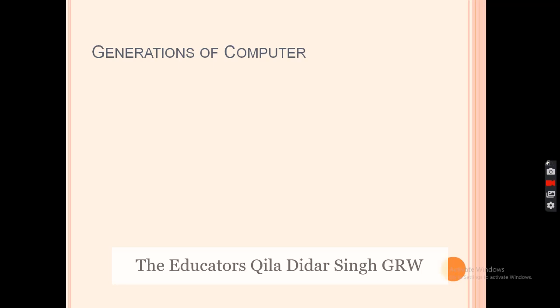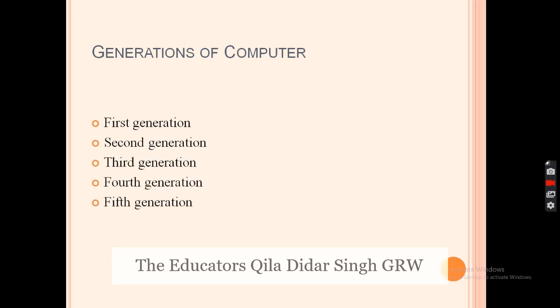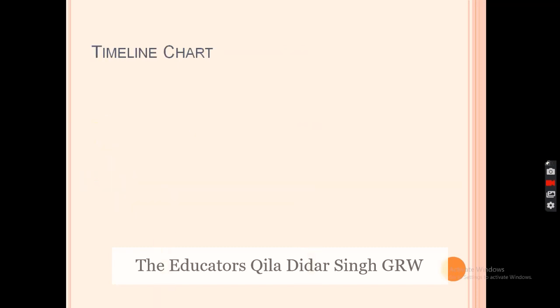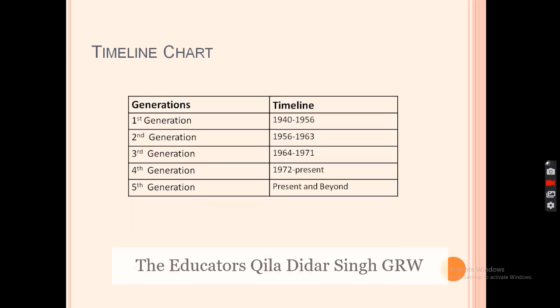The first question is: how many generations of computers are there? We have five generations of computers — first, second, third, fourth, and fifth. The time lengths show the starting and ending time of each generation. First generation: 1940 to 1956. Second generation: 1956 to 1963.